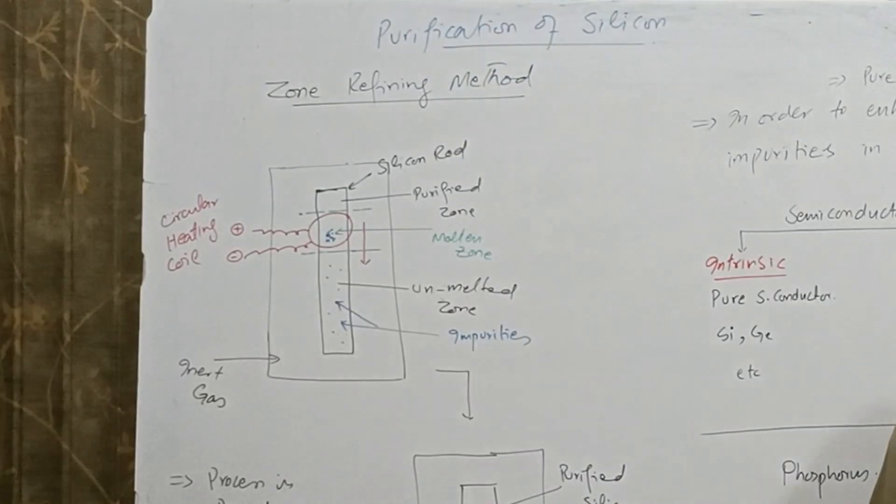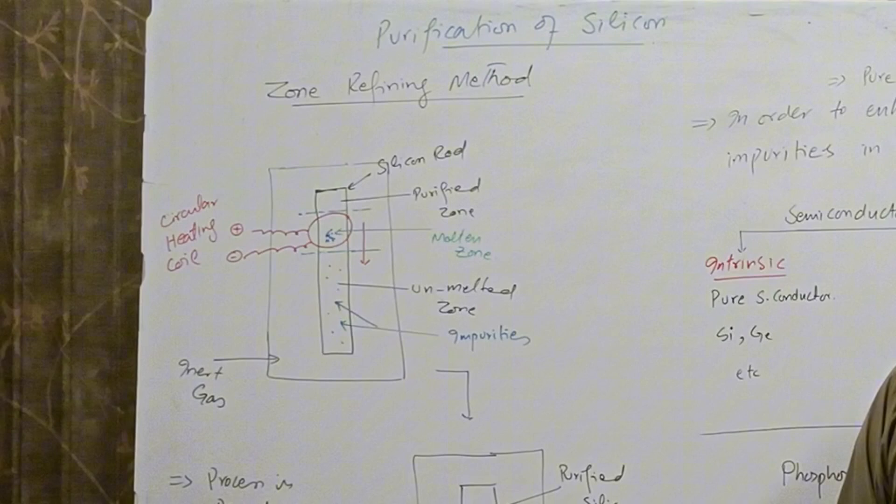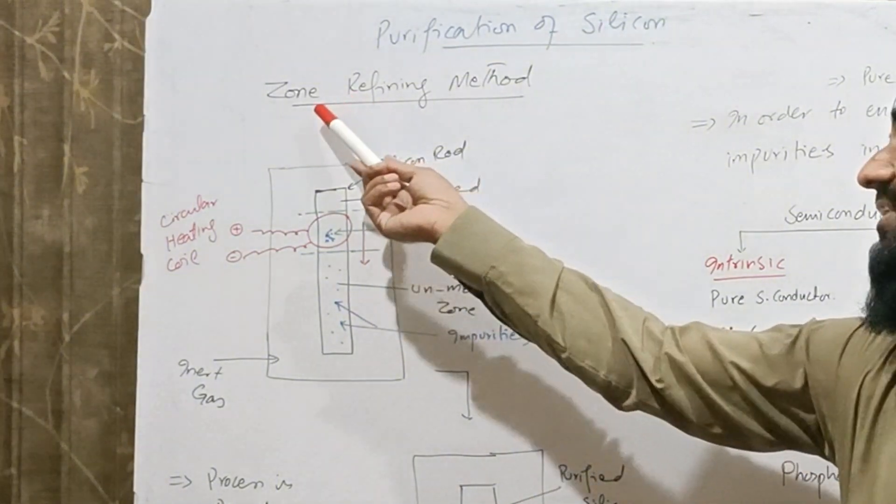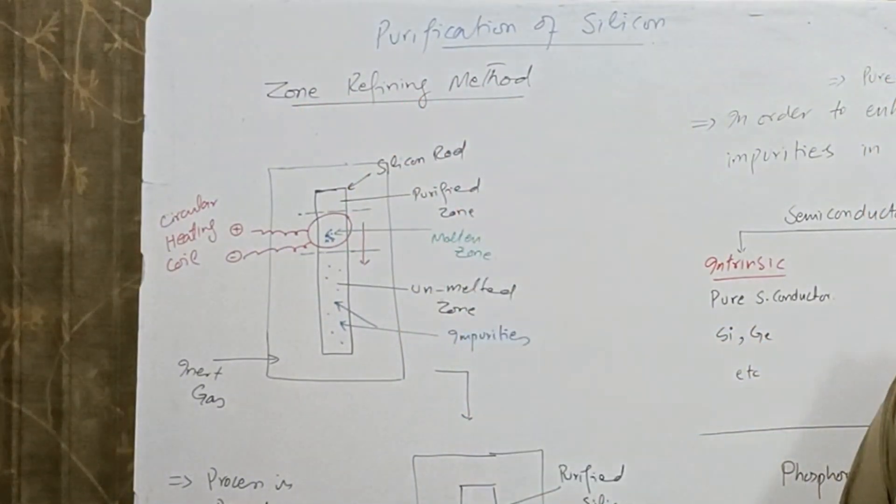There are several methods to purify the semiconductors or silicon. Few of the methods are distillation method, chromatographic method, and zone refining method. I will discuss this method as it is more reliable and gives more yield of purified silicon.